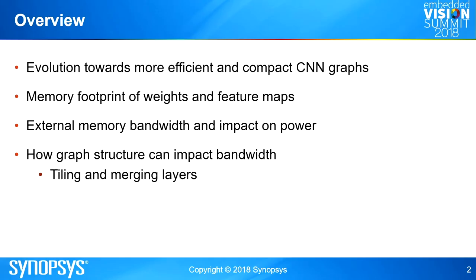The first thing that comes to mind, if you think about the resource constraints of convolutional neural networks on embedded systems, is the sheer amount of compute you need. These convolutional neural networks, even for a small problem like classification, typically require around a billion multiplications. If you scale up to real applications like detection or scene segmentation, you need a huge amount of compute.